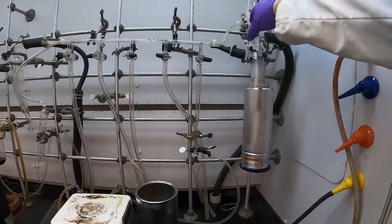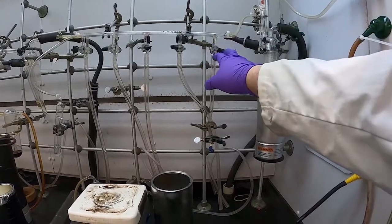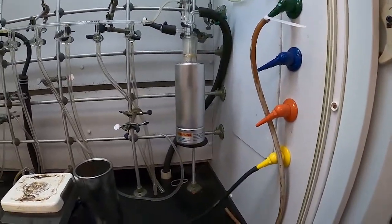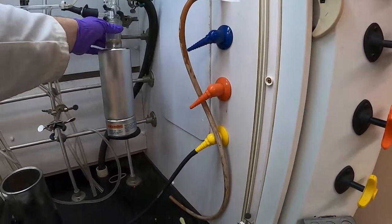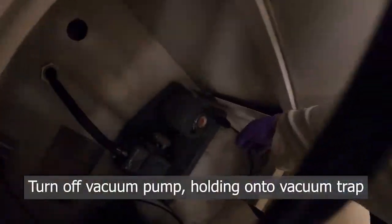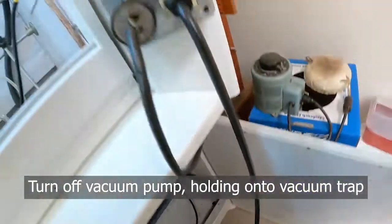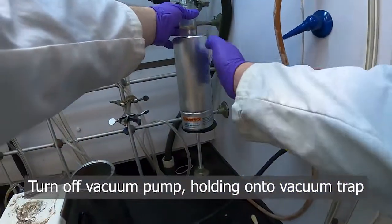So since there's no vent ports, we have to vent through the manifold itself. So what we'll do is we will pull onto our trap here again, turn off our pump while just keeping a hold of that trap.